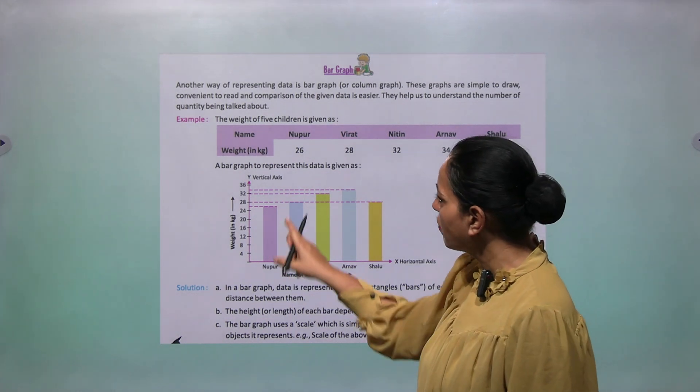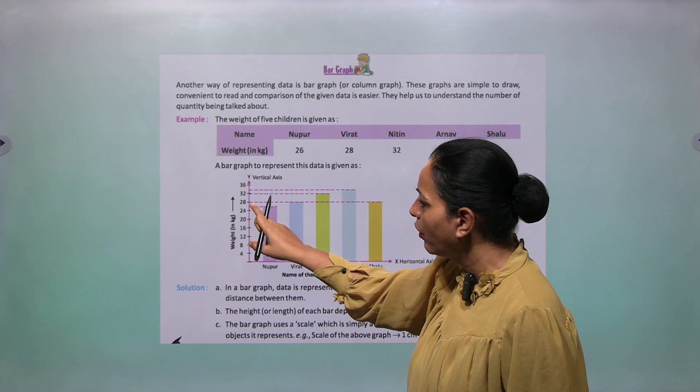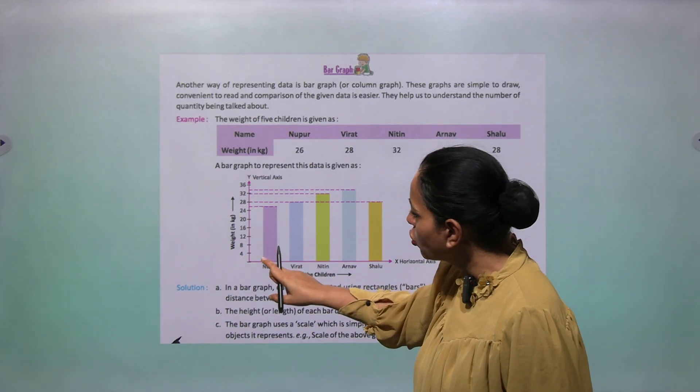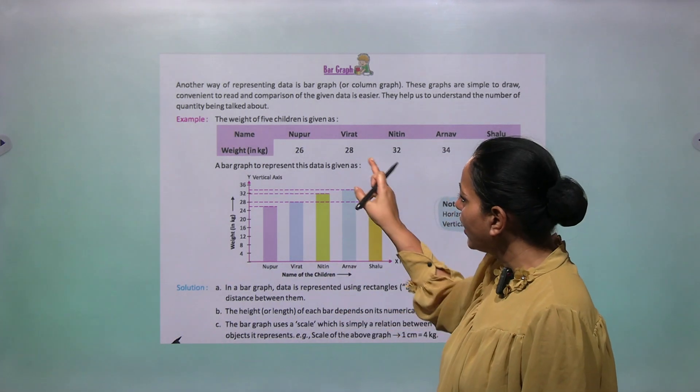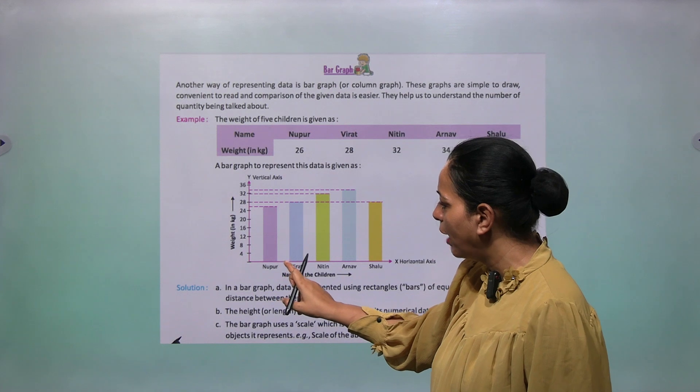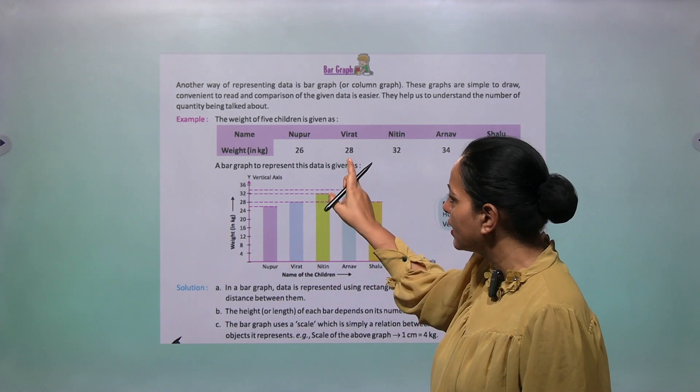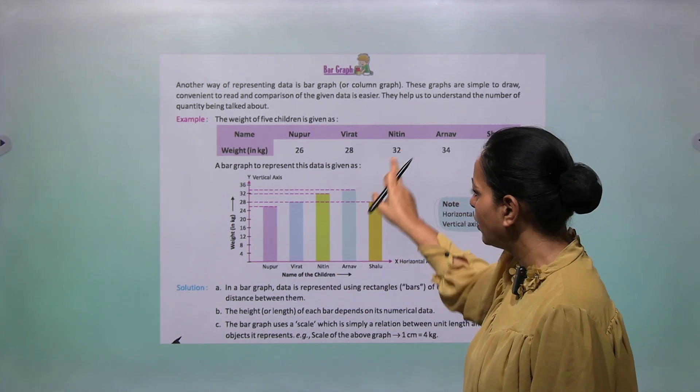The first one is 26. So what do you do? 26 is lying between 24 and 28. So corresponding to 26 we will take a bar. Next, 28. You have the same gap, you will draw the second bar, it is 28. Then you will draw according to 28. The next is 32, then you will draw a bar according to 32.